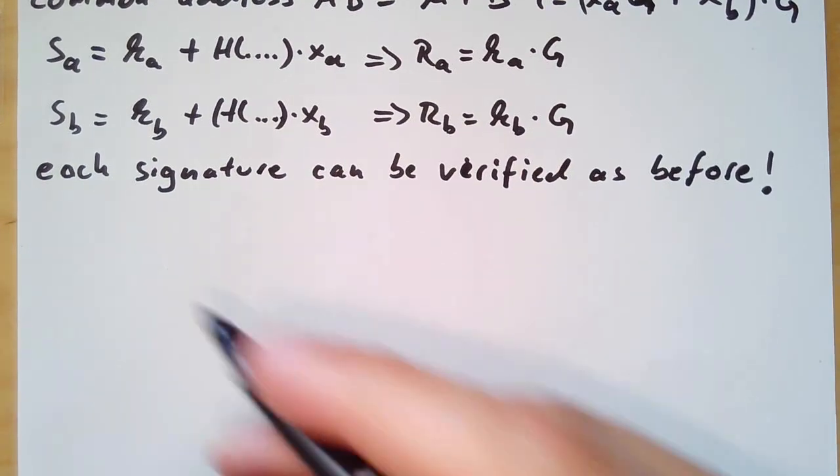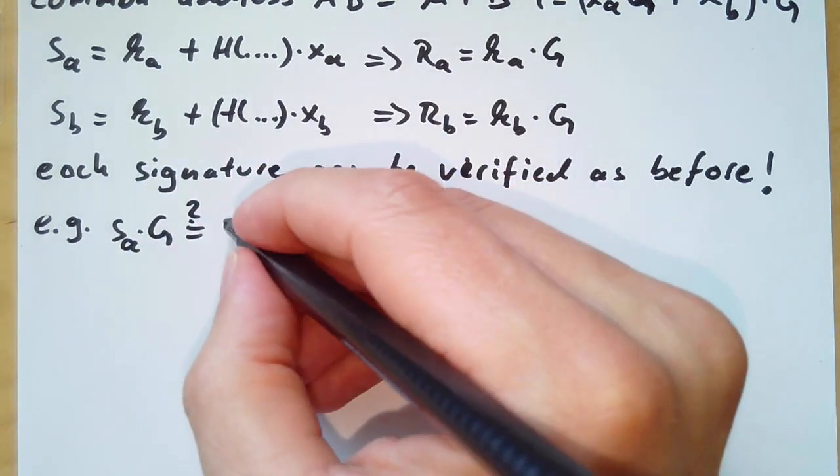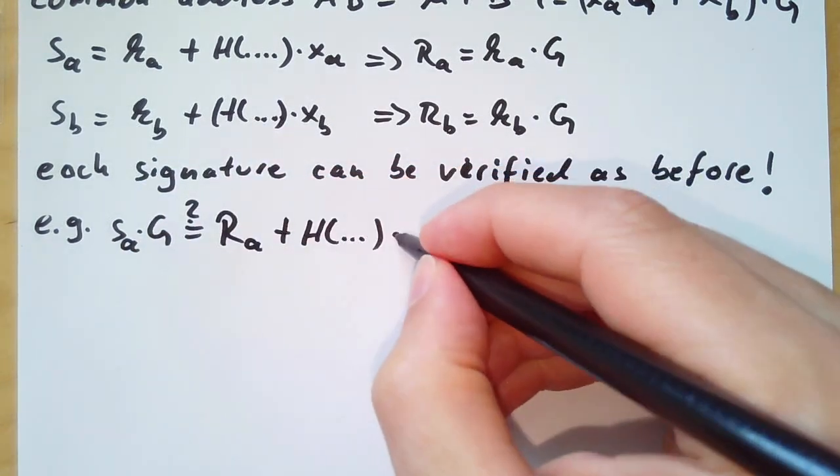Each signature can be verified as we have seen in the previous video. The verification goes as we knew before - we just have to multiply our signature equation with G and this produces the verification equation.